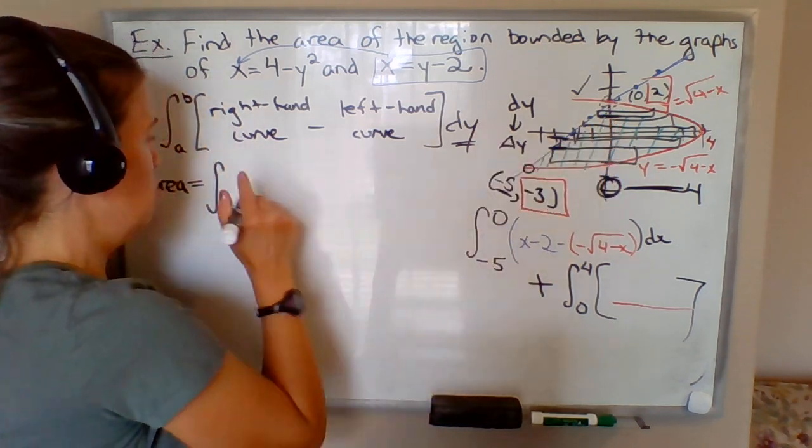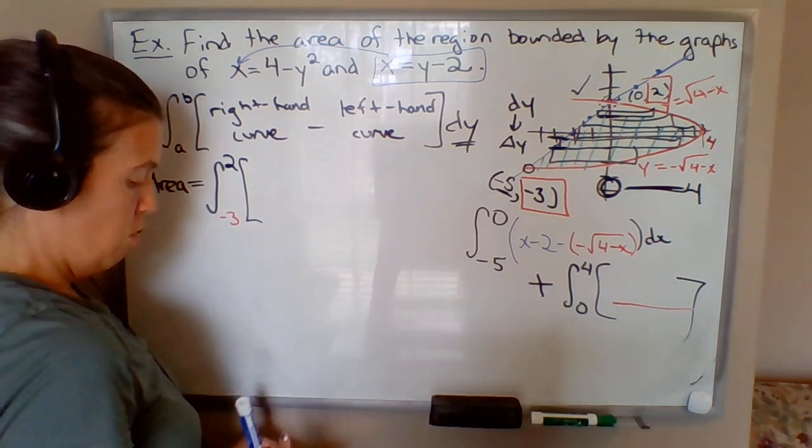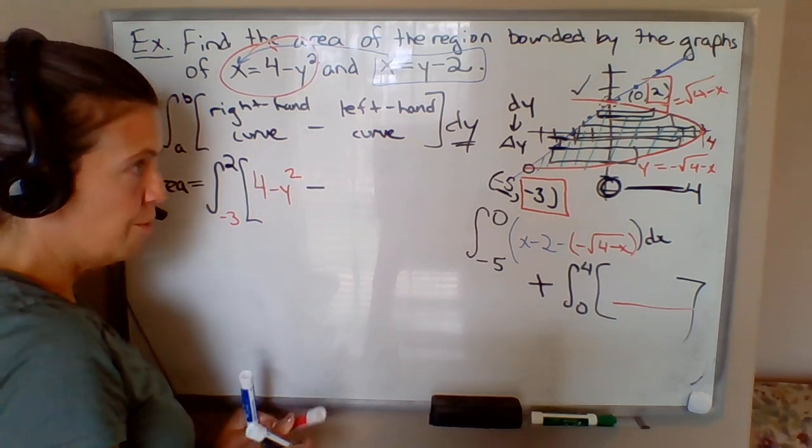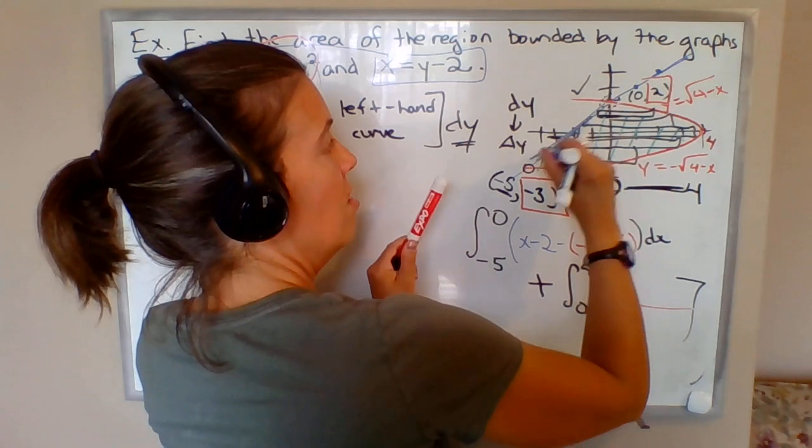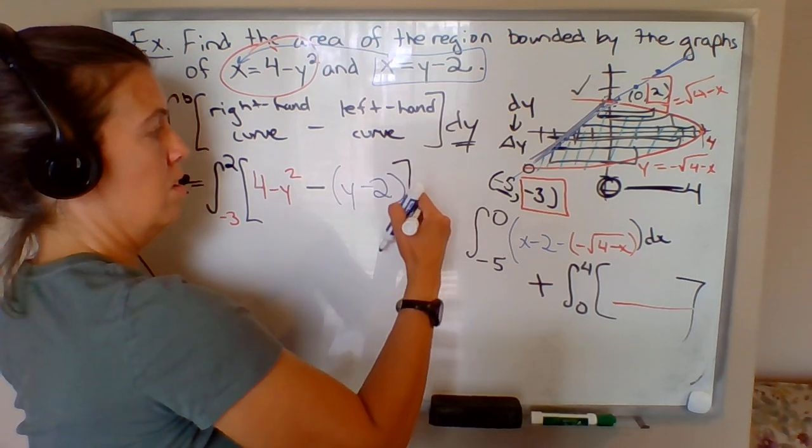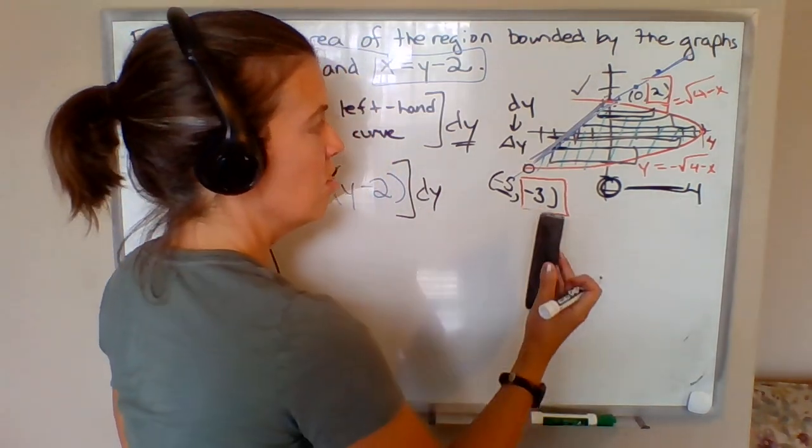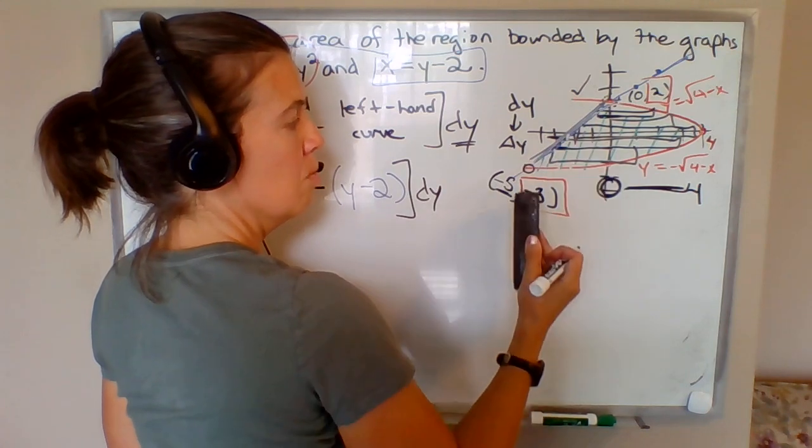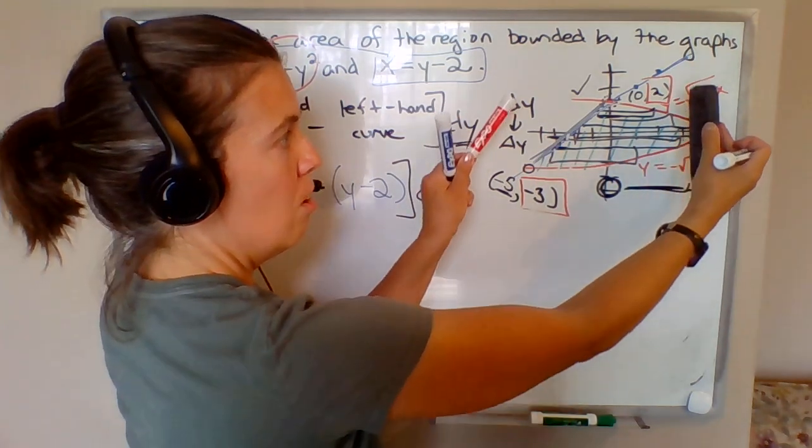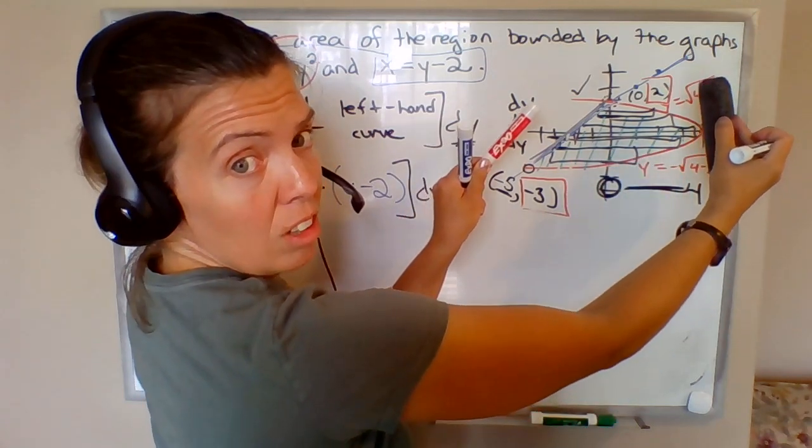We're going to integrate from -3 to 2 of right-hand curve, which is 4 - y², minus left-hand curve, which is the y - 2, dy. So instead of writing it as a sum of two integrals, looking at top minus bottom going -5 to 0 plus integral 0 to 4, we can do it all at once if we do right minus left. We can handle it all in one integral because it's consistent when you do right to left.